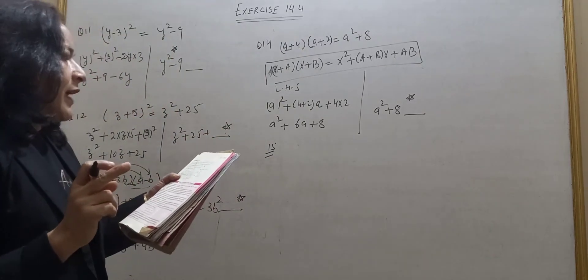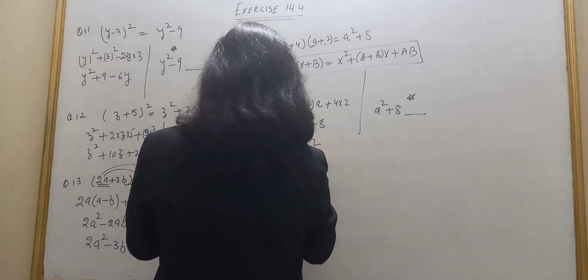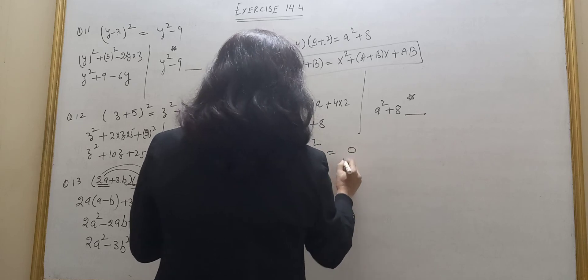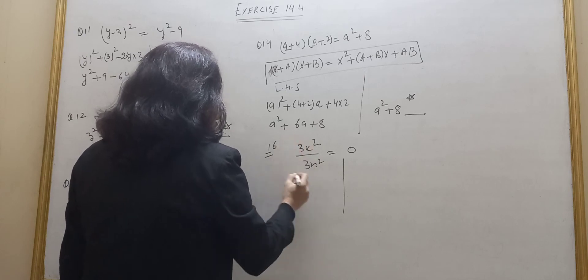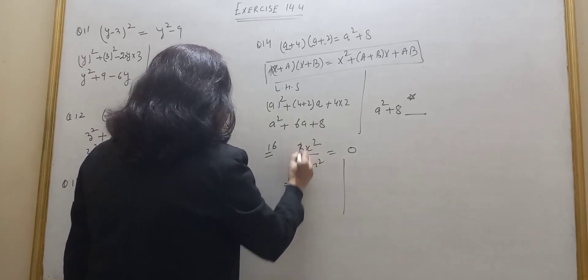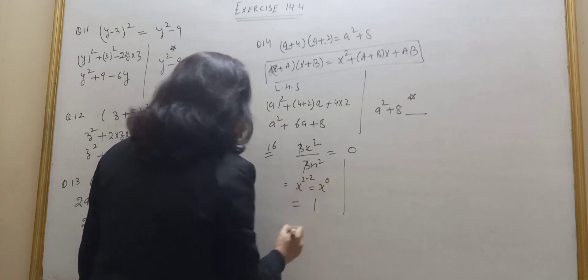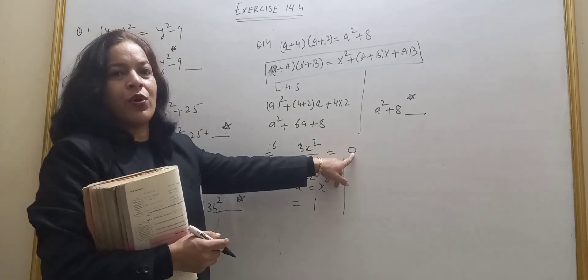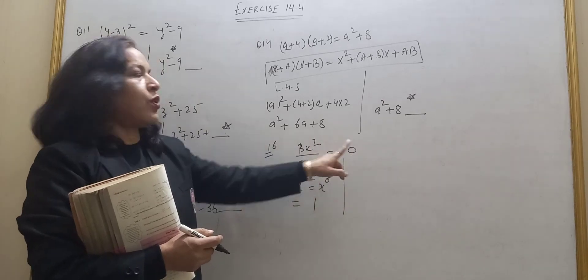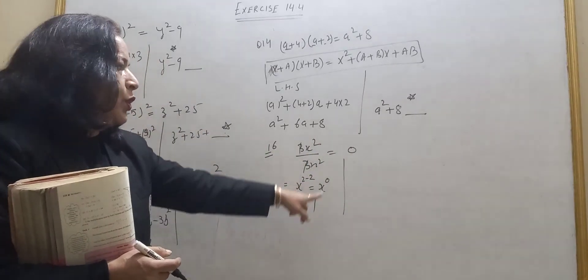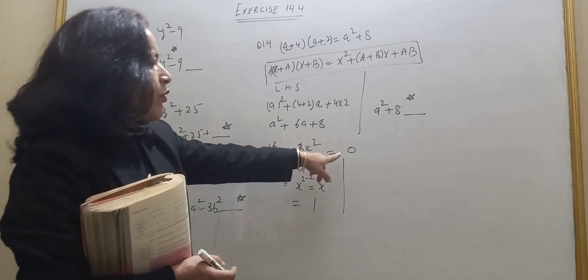Question 15 is similar to question 14, only the sign is different — here it is a minus 4 and a minus 2. Question number 16: 3x² upon 3x² is equal to 0. Let's check. 3 divided by 3 cancels, and x² divided by x² — applying the law of exponents, x to the power 2 minus 2 is x to the power 0. Anything to the power 0 equals 1. But they are writing it is 0. The correct answer is 1, not 0.